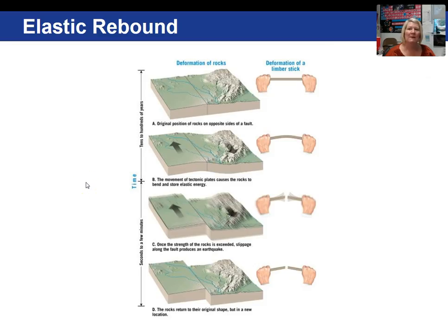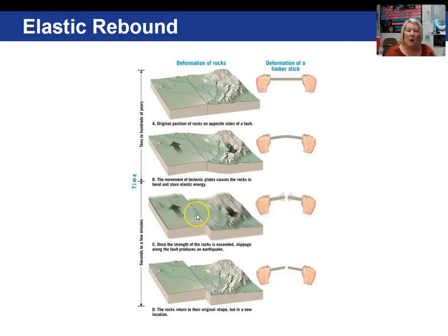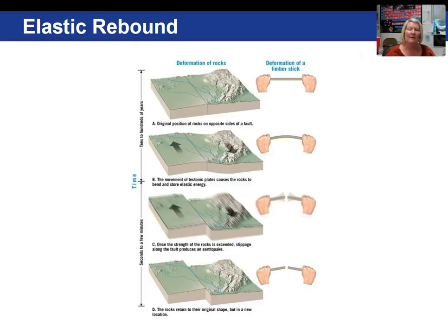Let me discuss a little bit more about Reid's elastic rebound theory. You can picture yourself holding a limber stick. Stress builds up along the fault and it begins to bend, storing elastic energy. Once the strength of the rocks is exceeded, slippage along the fault produces the earthquake — so your stick breaks. The rocks return to their original shape but in a new location, and that's the rebound effect.